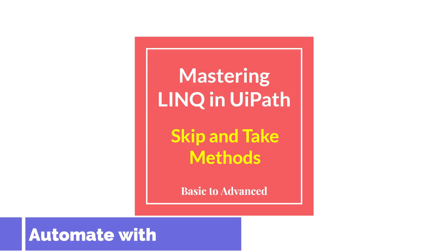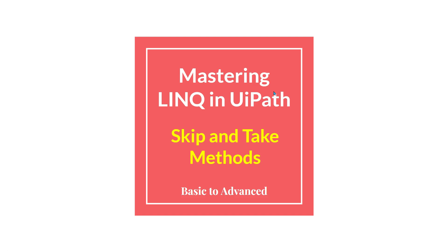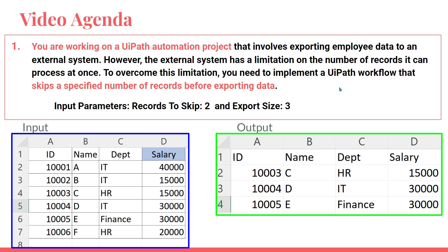Welcome back to Automate with Rakesh. In this video we are going to learn two different methods: Skip and Take. The problem statement is: you are working on a UiPath automation project that involves exporting employee data to an external system. However, the external system has a limitation on the number of records it can process at once.